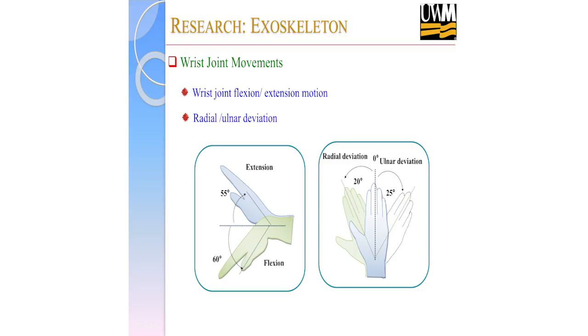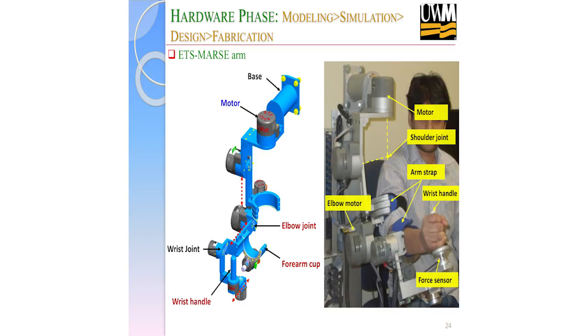For the wrist, we have two degrees of freedom — radial-ulnar deviation and flexion-extension. We keep the shoulder range at 140 degrees to make the design simpler, though for a commercial prototype you would want the full range. The design includes adjustable mechanisms shown by the dotted lines to accommodate a wide range of users — shoulder to elbow, elbow to wrist, and wrist to hand size can all be adjusted by sliding mechanisms.